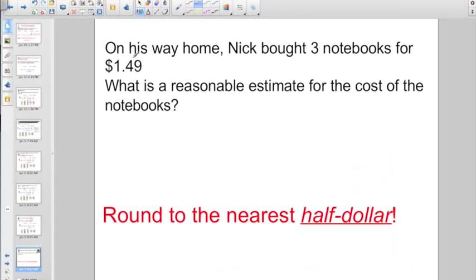Check out this one though, because it's a little different rounding concept for us. On his way home, Nick bought three notebooks for $1.49. What is a reasonable estimate for the cost of the notebooks? Now, up until this point, we've been saying round to the greatest place, right?